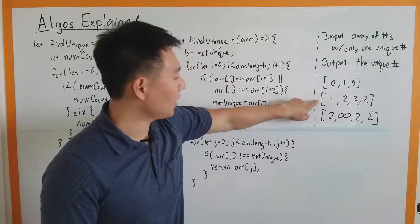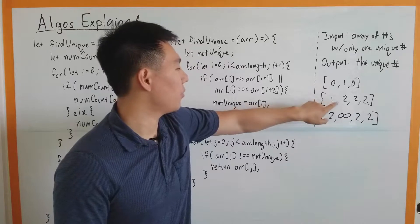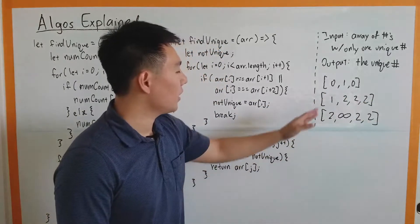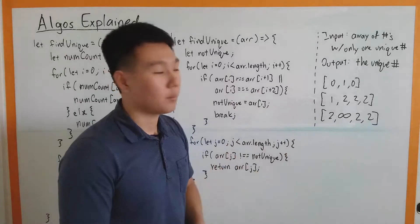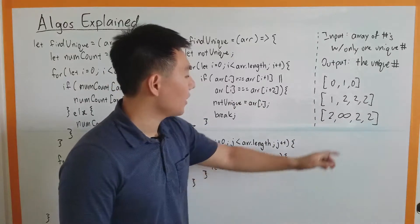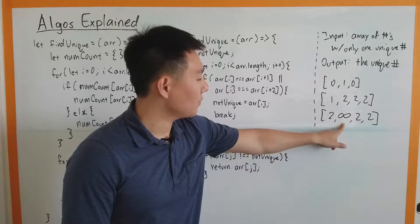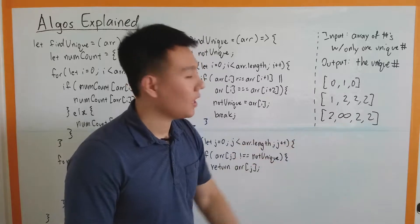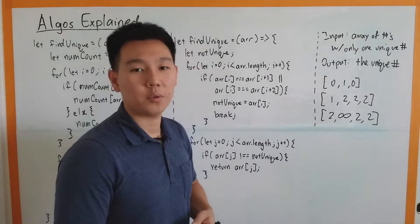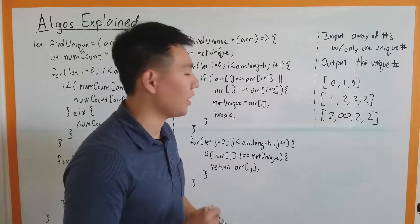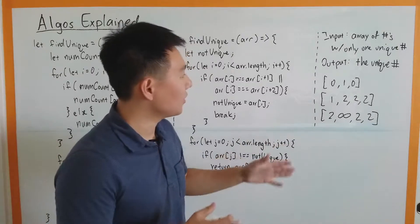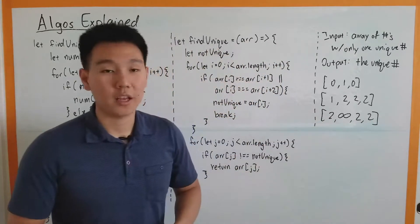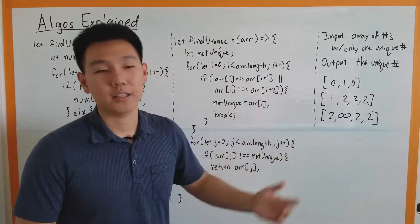You could also get an array like this with the one and an infinite amount of the non-unique number. You could also get entries like infinity, negative infinity, negative numbers, and decimals. So these are not just integers — these are just numbers that are either unique or not unique.